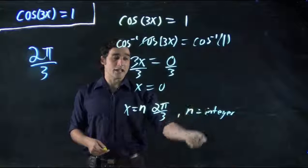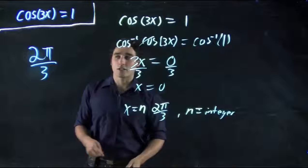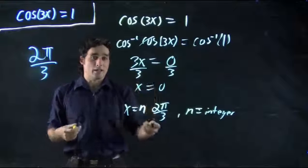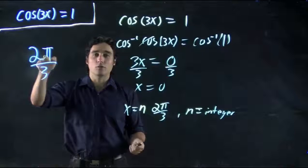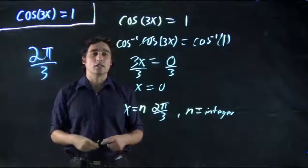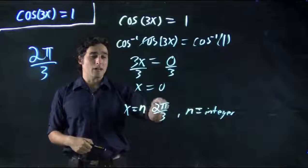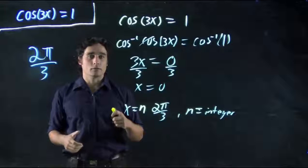So there is again an infinite number of solutions. It's just we influence the period with this number right here, how often it repeats itself, when it repeats itself. It's no longer 2π, now it's 2π over 3, so it repeats itself sooner. And that's in both directions, remember, minus and plus. So we're all done.